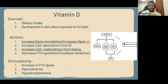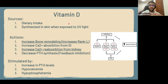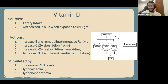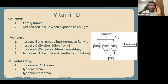Vitamin D is stimulated by increased PTH levels, hypocalcemia, and hypophosphatemia. It increases phosphate levels in the blood — this is a key difference from PTH. PTH inhibits phosphate reabsorption, while vitamin D increases phosphate reabsorption. Vitamin D acts on the intestine, kidney, and bones to increase serum calcium, while PTH acts only on the kidney and bones.